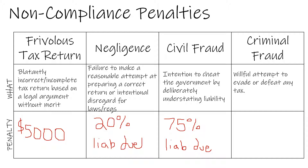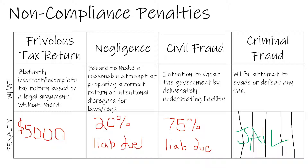Finally, criminal fraud — this is a willful and deliberate attempt to evade or defeat any tax. Criminal fraud is a felony offense and is punishable by severe fines up to and including federal imprisonment. Such cases go to the federal court, wherein the IRS must establish guilt beyond a reasonable doubt. It's important to note that in cases of criminal fraud, the IRS will turn to a criminal investigator.